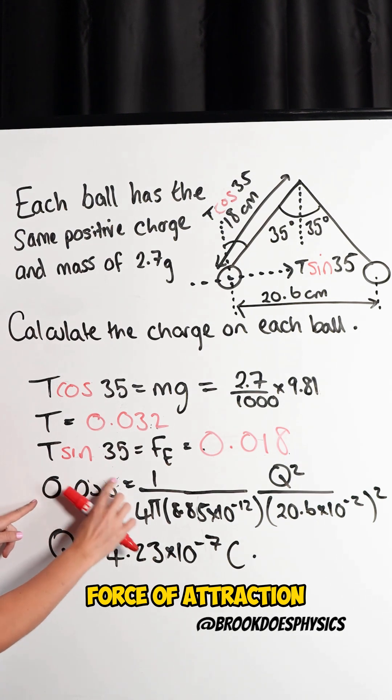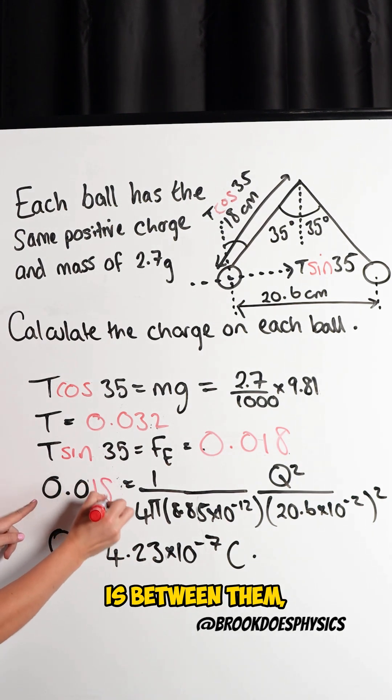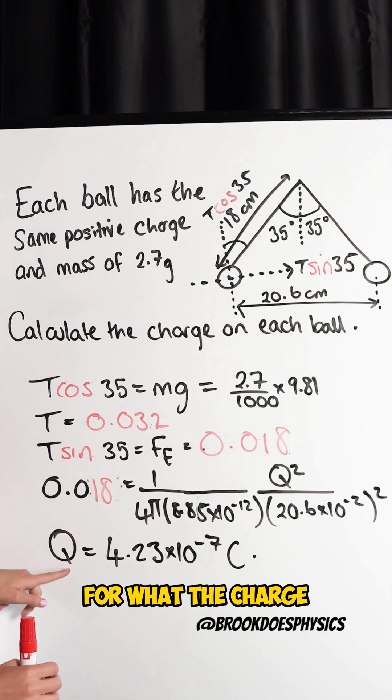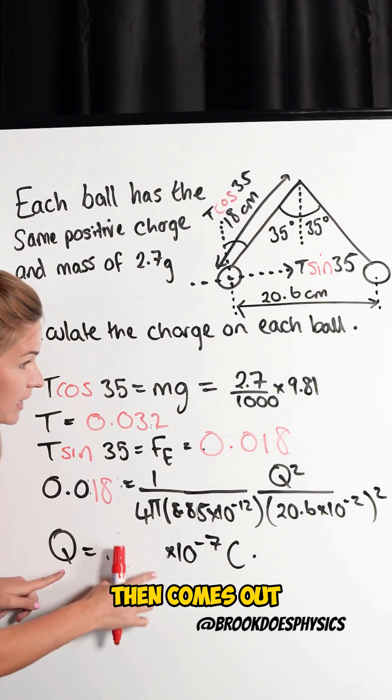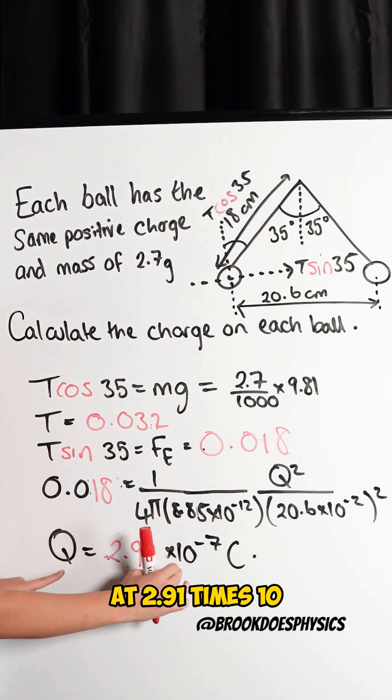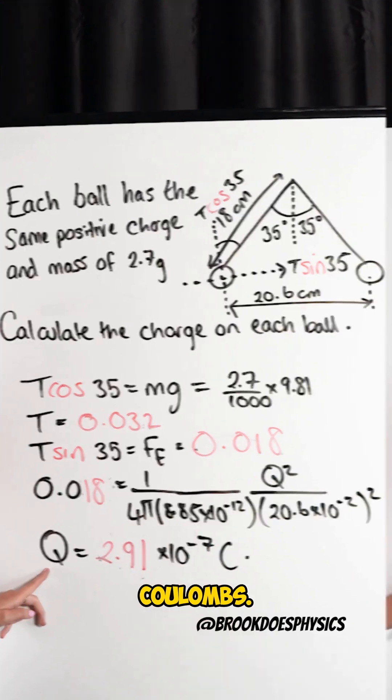So if I know what the electrostatic force of attraction is between them, I can now solve what the charge of one of the particles is. So the charge of that particle then comes out at 2.91 times 10 to the negative 7 coulombs.